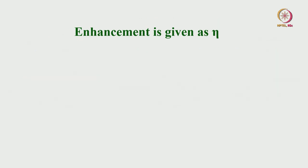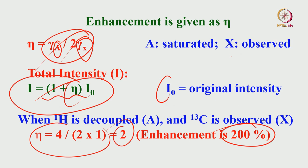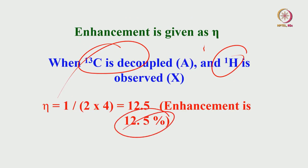Instead, if I observe proton while decoupling carbon-13 — the reverse experiment — the enhancement on the proton signal when carbon-13 is decoupled is only about 12.5 percent. This is because the gamma ratio is now reversed. When observing carbon-13 with proton decoupled: 200 percent gain. When observing proton with carbon-13 decoupled: only 12.5 percent. This is due to the gamma ratio factor.